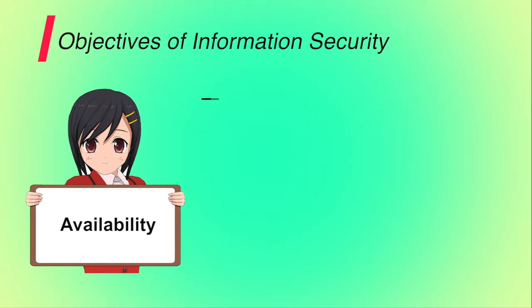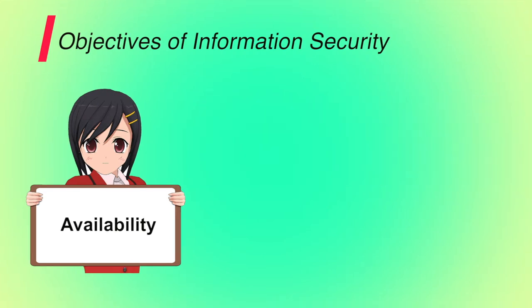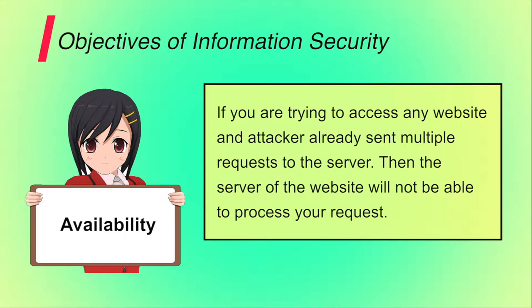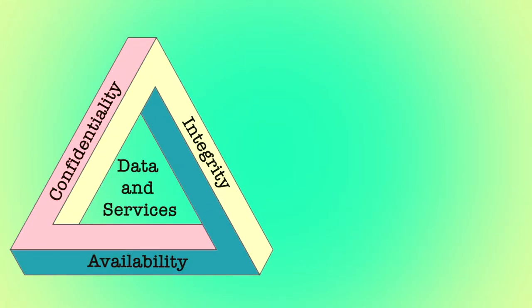Third is availability. It is ensuring timely and reliable access to and use of information. A loss of availability is the disruption of access to or use of information. For example, if you are trying to access any website and an attacker already sent multiple requests to the server, the server will not be able to process your request — meaning the data is not available to the authorized user. Service disruptions due to hardware failure, software failure, power outages, or system upgrades could also make the system unavailable. The data should always be available to the authorized user whenever required.